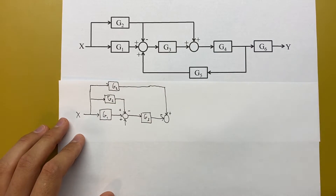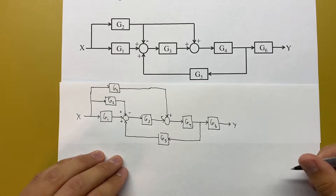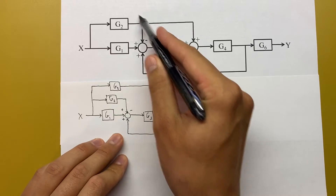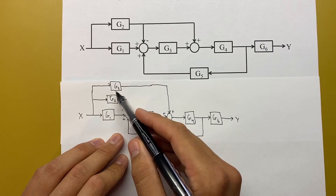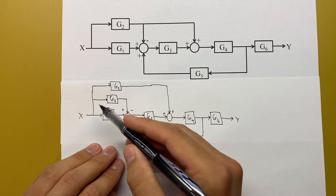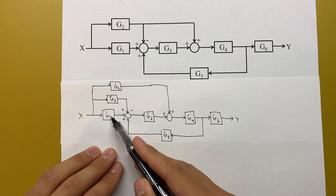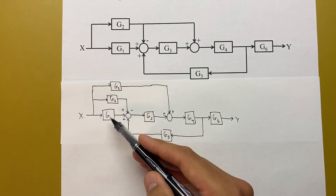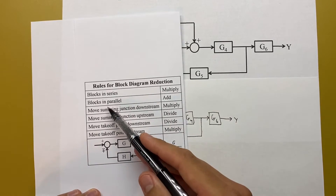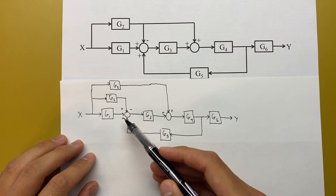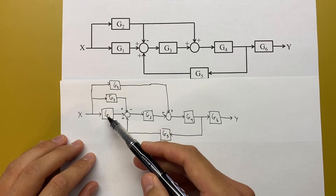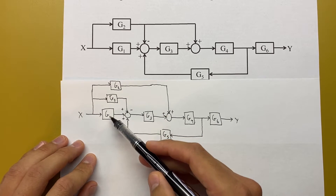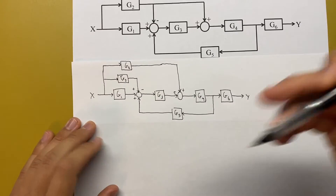I'll cut to after I redraw all of this. Now that we've got it redrawn, you can see that all we've done is take this takeoff point, move it to the other side of g2, and then multiply that branch by g2 to keep everything the same. Now what we have is we can see that g1 and g2 here are clearly in parallel. So we can check our rules and see that blocks in parallel, we just add them together. Here we've got a positive sign from the g1 branch and a negative sign from the g2 branch, so all this can be combined into g1 minus g2.